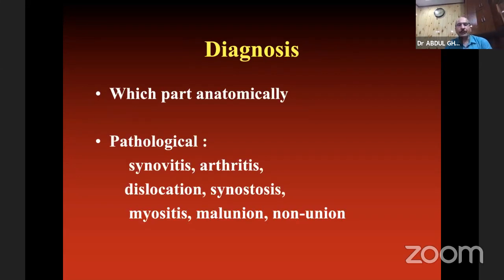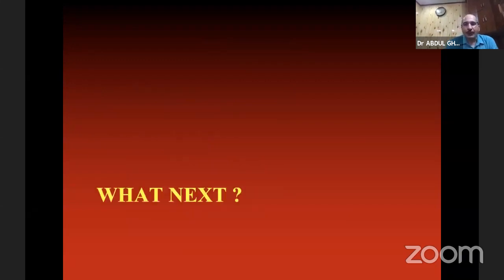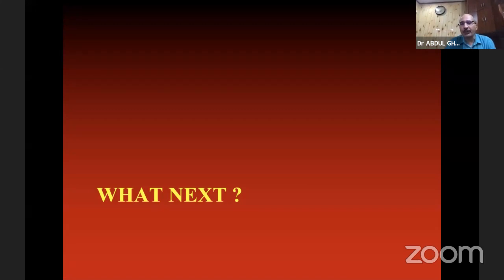Your diagnosis should have two components: which anatomical part is affected, and what is the pathology — whether it is synovitis, arthritis, dislocation, synostosis, myositis, malunion, or nonunion. What to do next: don't jump to surgery even if you know the diagnosis. Always confirm the diagnosis by investigation. In orthopedics, the first investigation is an x-ray — AP and lateral views of the elbow. If suspecting inflammatory pathology, ask for CBC, ESR, and CRP.